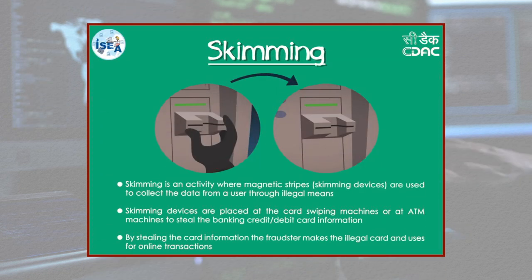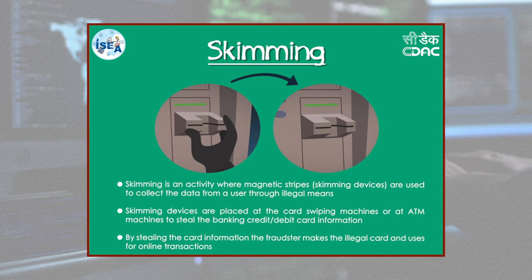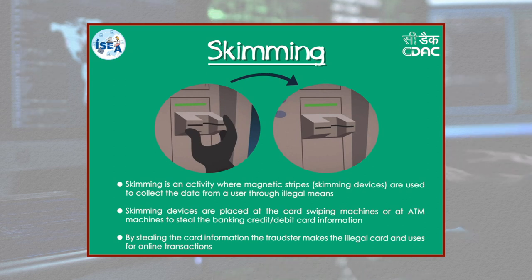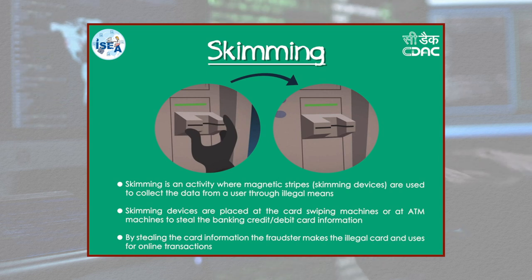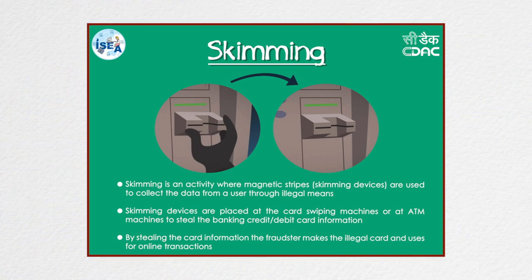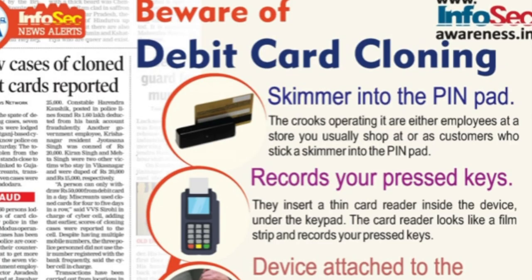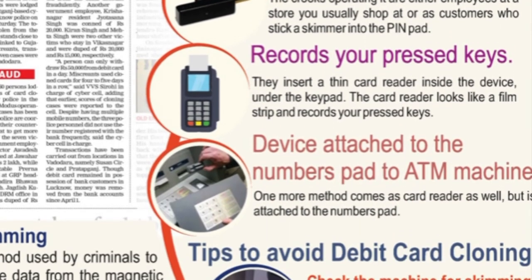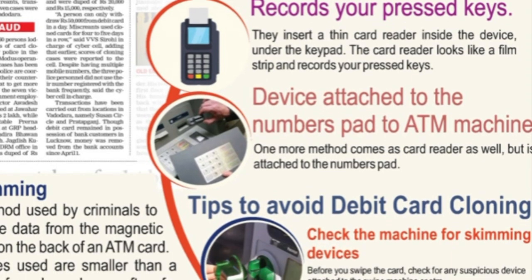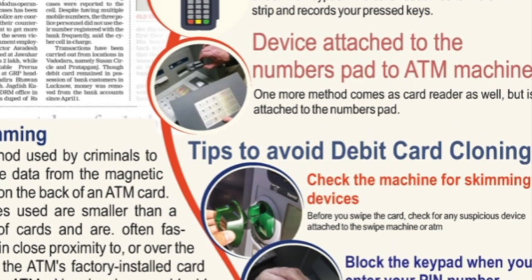Skimming is the theft of credit card or debit card information. A thief can procure the victim's credit card number using basic methods such as photocopying receipts, or more advanced methods such as using a small electronic device called a skimmer to swipe and store hundreds of victims' credit card numbers. Common scenarios for skimming are restaurants or bars where the skimmer has possession of the victim's credit card and makes note of card details for further use.